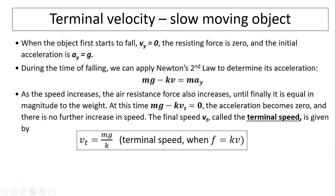Terminal velocity for a slow-moving object. When an object first starts to fall, its initial velocity equals zero, the resistance force is also zero, and the initial acceleration is g. As it falls, we apply Newton's second law: mg − kV = ma_y. As speed increases, air resistance kV also increases until it equals the weight in magnitude. At this point, mg − k·V_t = 0. This V_t is called terminal speed; the acceleration is zero and there is no further increase in speed. Solving: V_t = mg/k. This is terminal speed for a slow-moving object.